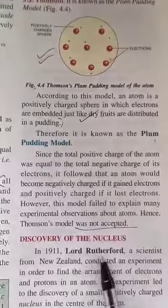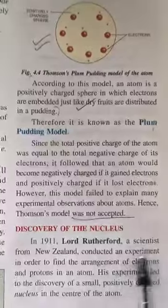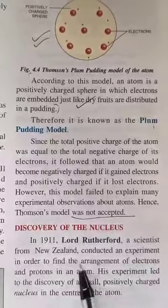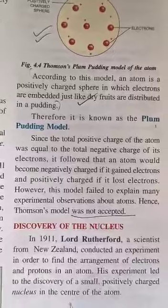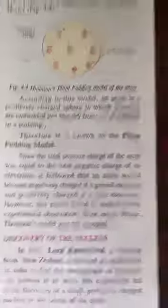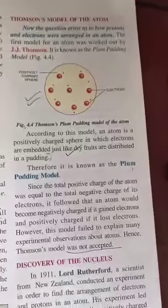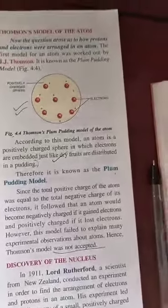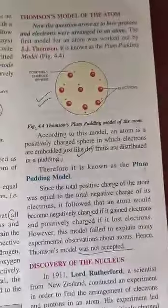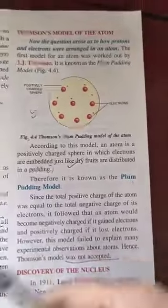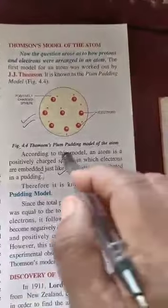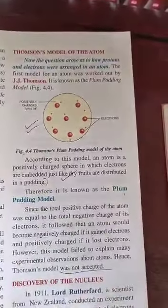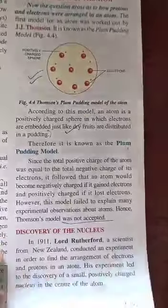Look at Lord Rutherford. A scientist from New Zealand conducted an experiment to find the arrangement of electrons and protons in an atom. It is known as Rutherford's Gold Foil Experiment, also called the Alpha Ray Scattering Experiment.